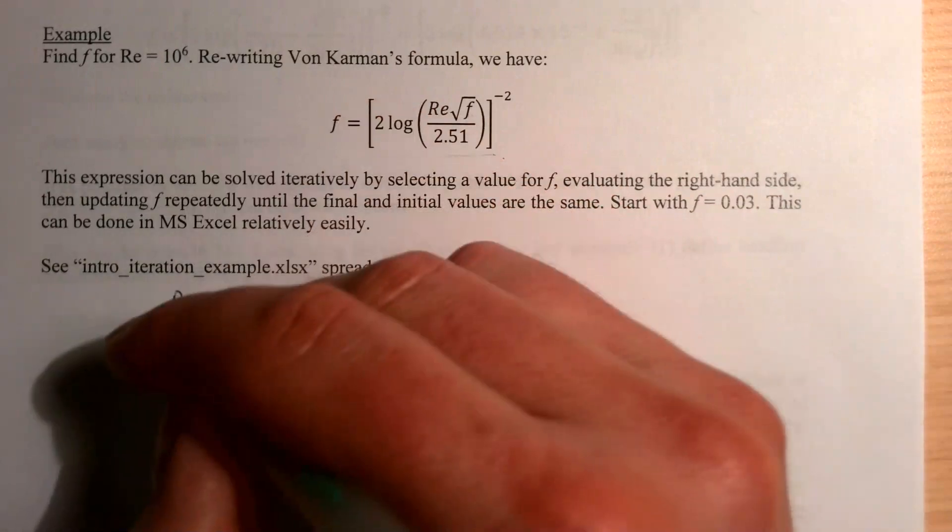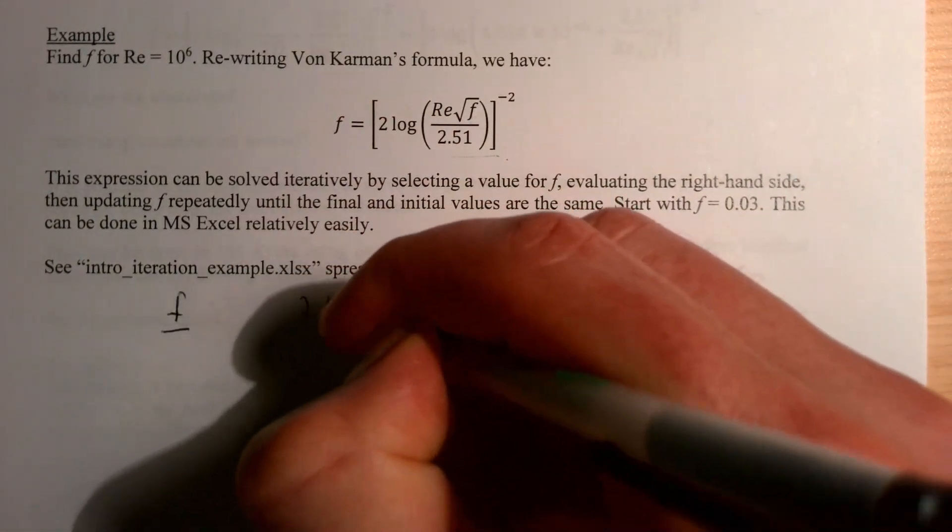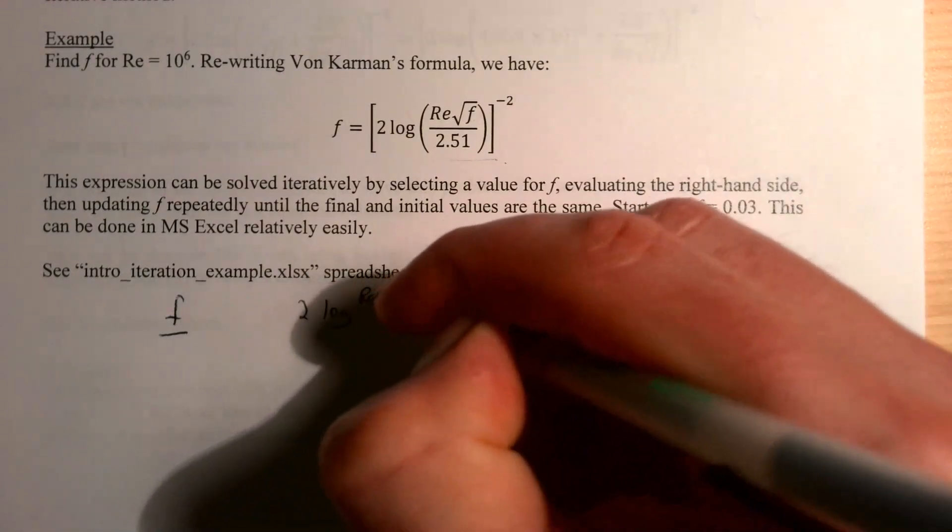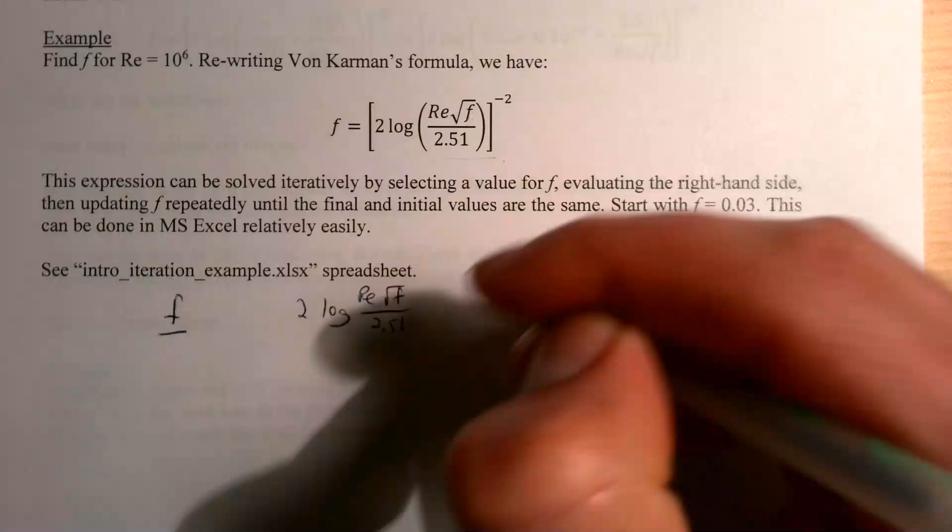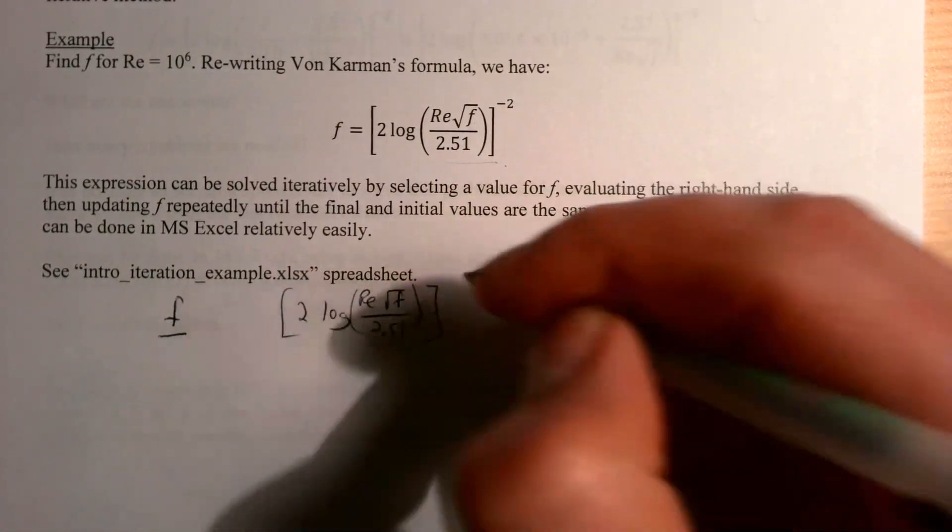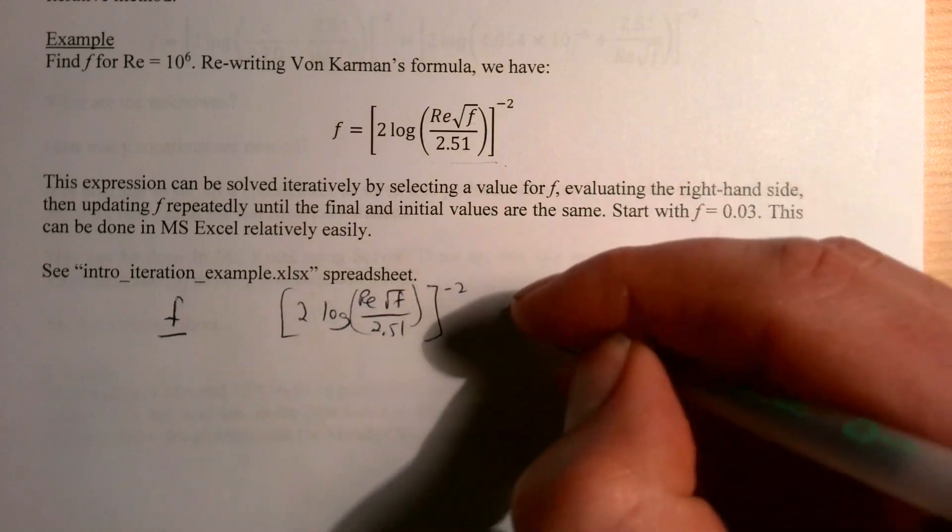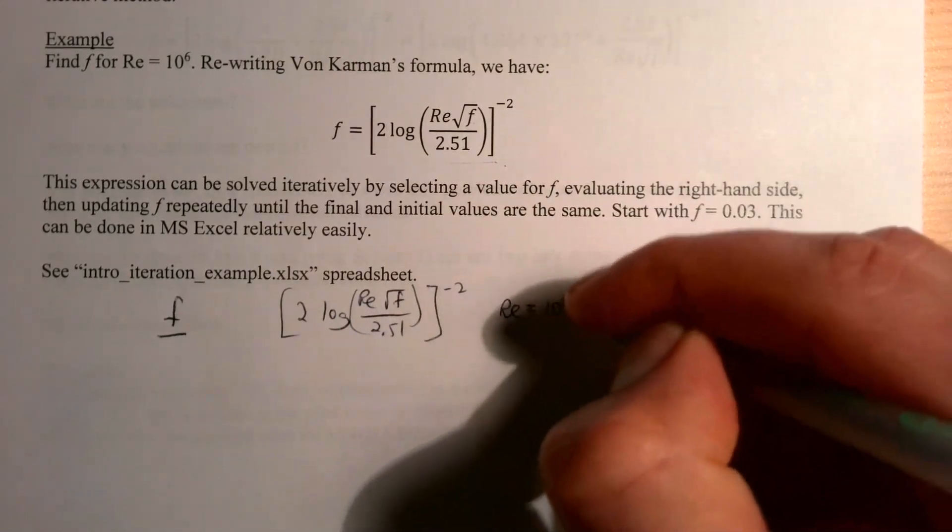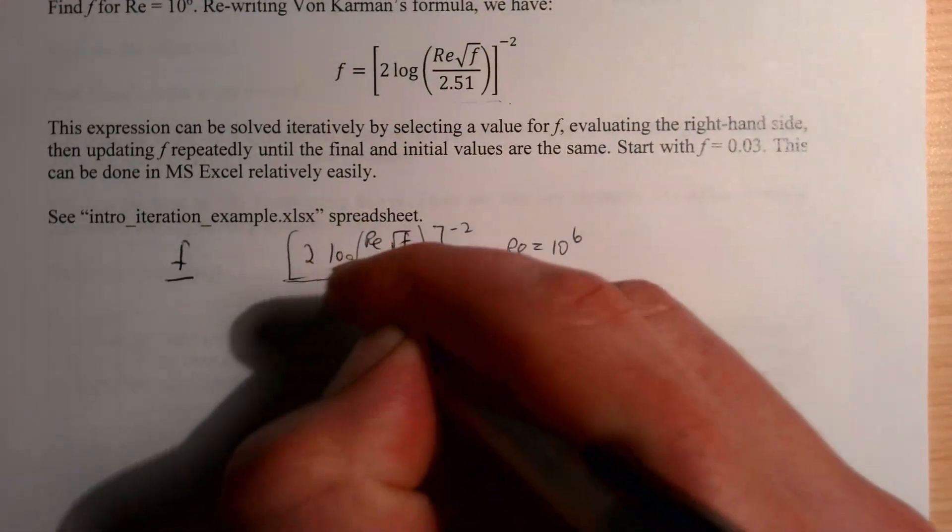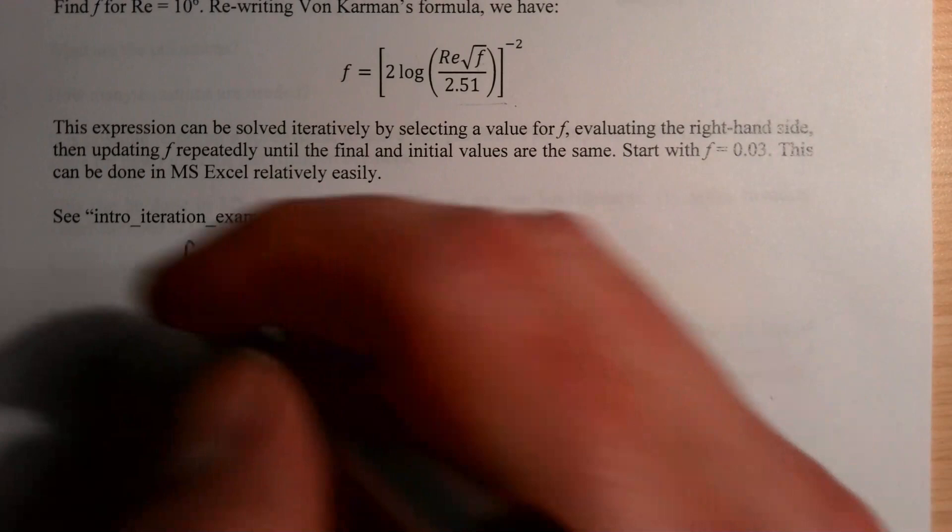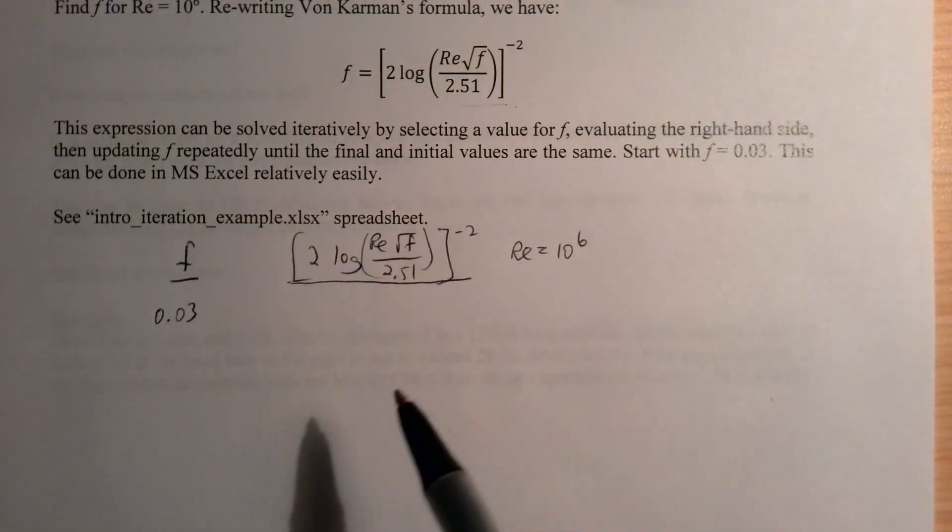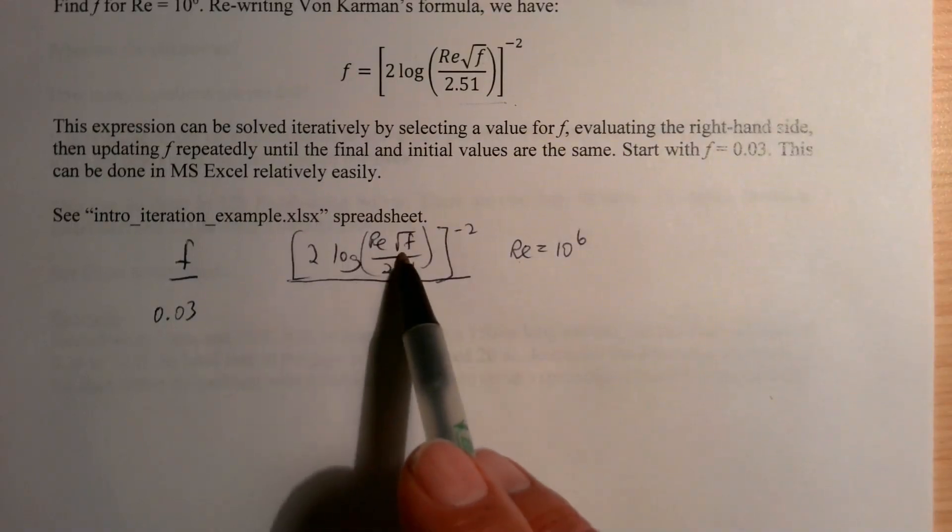I'll have a value for f, and then I'm going to compute the right-hand side of this equation. So I'll have an f, and then we'll see what the value of 2 times the log of the Reynolds number times the square root of f over 2.51, all to the negative 2 power, is. Of course, the Reynolds number in each case is 10 to the sixth power. If we put f is 0.03, which I said is a nice kind of round number in the middle, plug that in for Reynolds number is 10 to the 6...